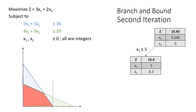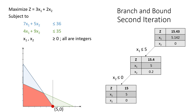For the second iteration, branch the problem by selecting an integer value for x2, as it is a decimal value compared to x1 which is already an integer number. On the left, we have x2 less than or equal to 0 from 0.2. It moved downwards our boundary, which is still visible. The new values of the variables are x1 equals 5 and x2 equals 0. As you can see, it now satisfies the integer restriction. However, it doesn't mean that we will stop here, for we will try to compare other solutions with integer values along the next iterations, if applicable.